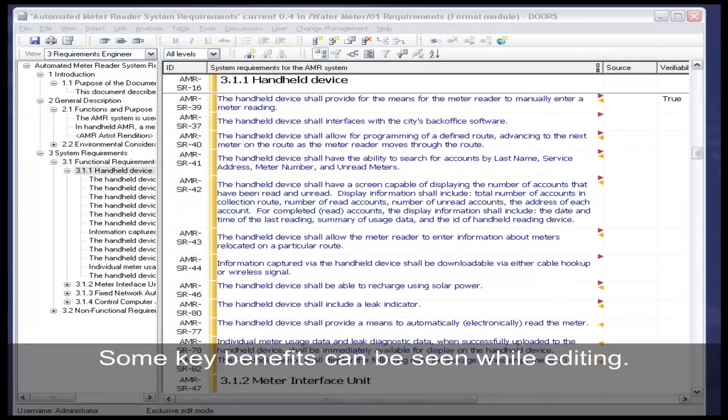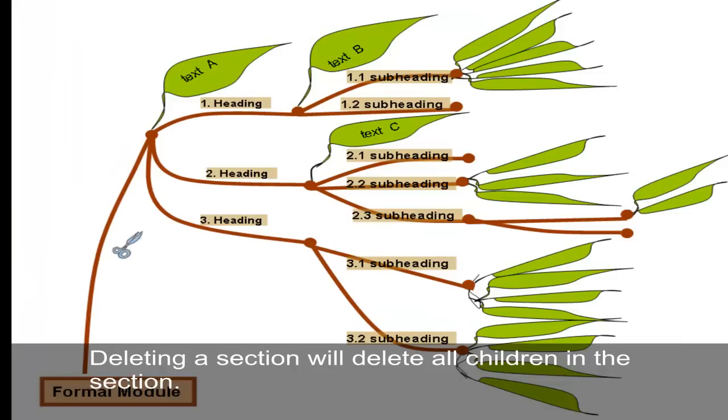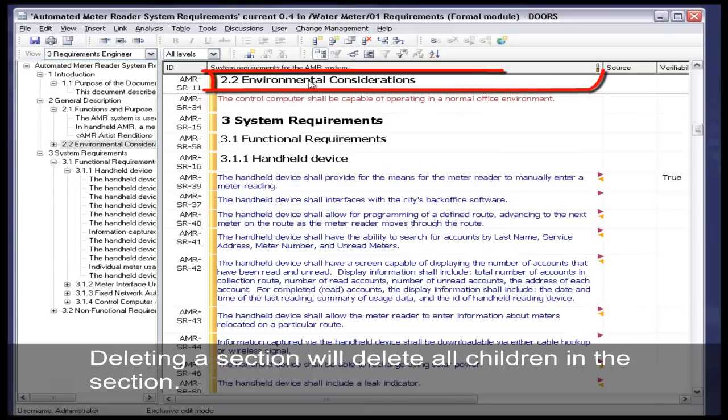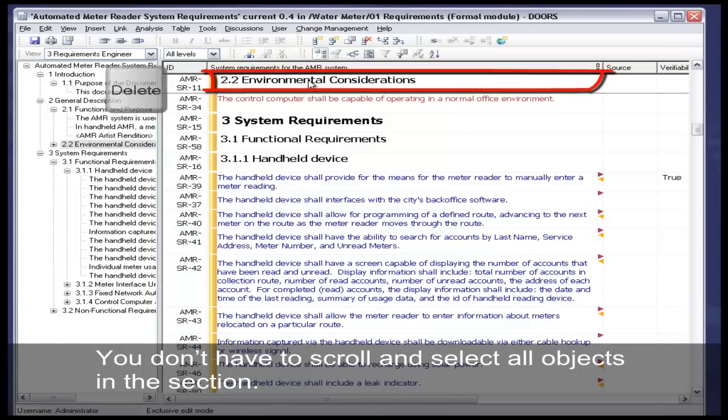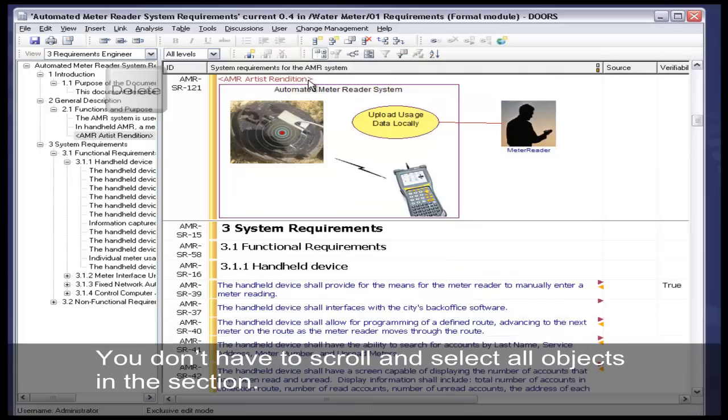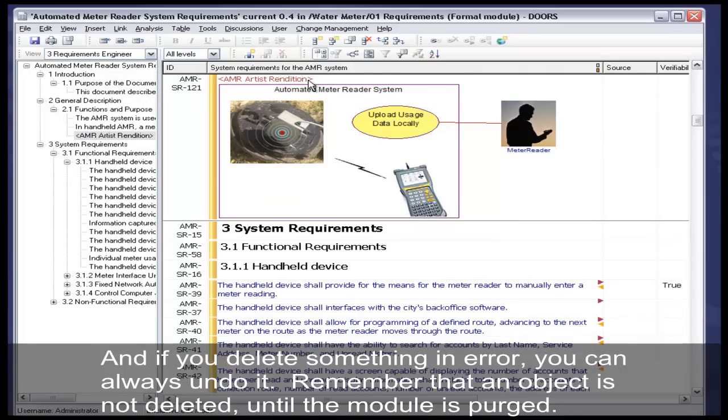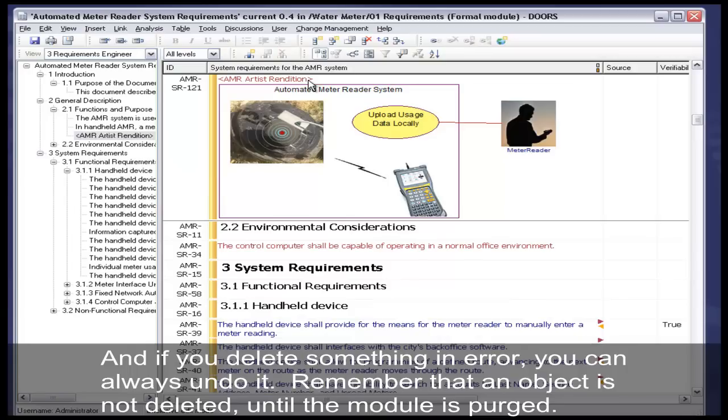Some key benefits can be seen while editing. Deleting a section will delete all children in this section. You don't have to scroll and select all objects in the section. Deleting the parent will delete all subsequent children. And if you delete something in error, you can always undo it. Remember that an object is not deleted until the module is purged.